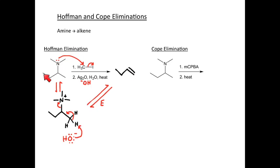We started with a tertiary amine attached to four carbons, and now we still have those four carbons but we've formed our alkene. Additionally, we can write the other side product: trimethylamine. But the point of this reaction is really to form our alkene. What we need to remember from the Hoffman elimination is we form the less substituted alkene — this alkene is not the most stable alkene, and that's the product formed presumably due to steric factors from the three methyl groups.